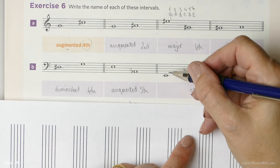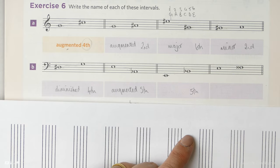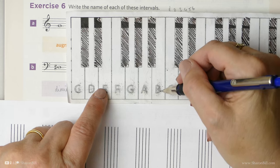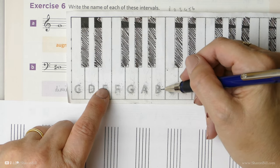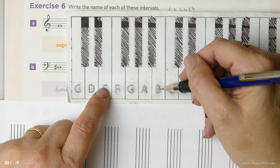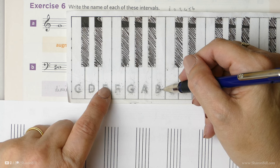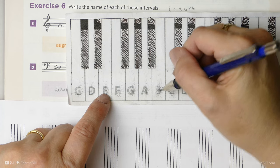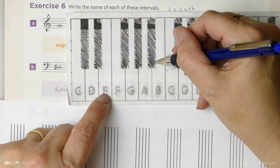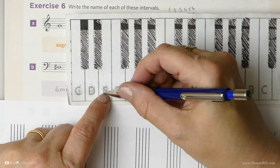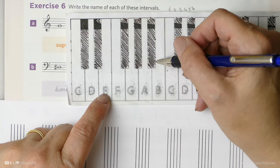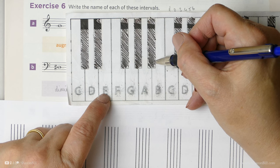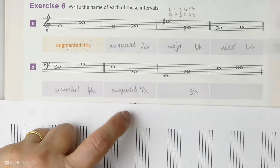So E to B is a perfect 5th. Remember, we don't have major, minor 5ths. So E to B is perfect. And then if we just drop that down a semitone, we can see that we've made the interval small. We've diminished the interval from the E to the B flat. And so instead of perfect, we've made it a diminished 5th.